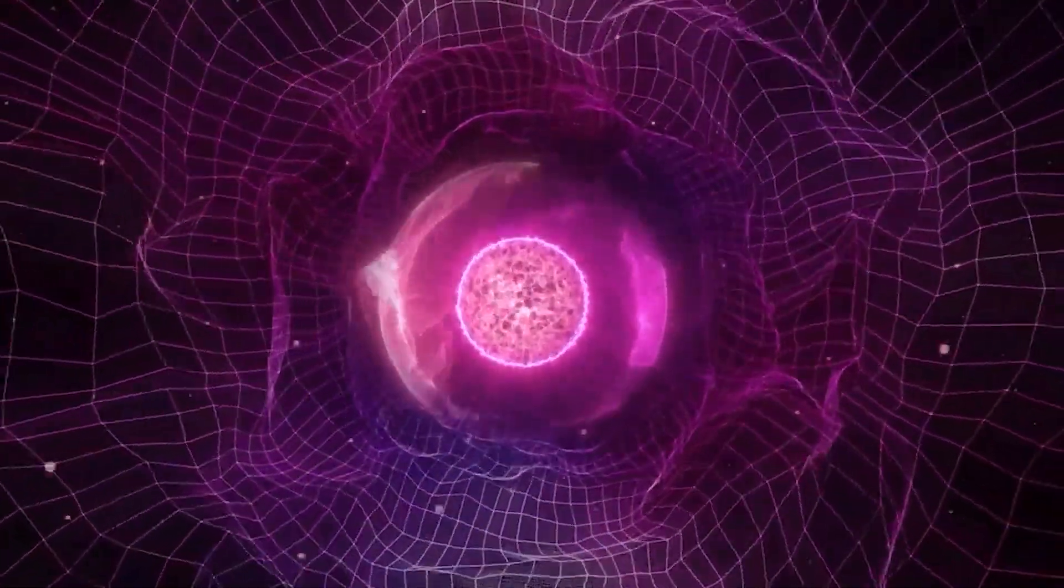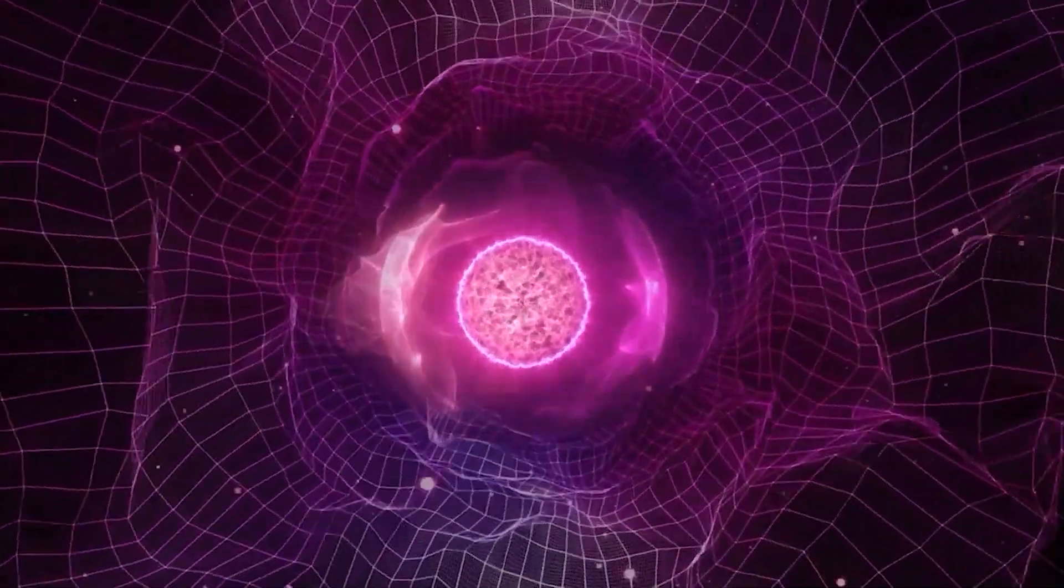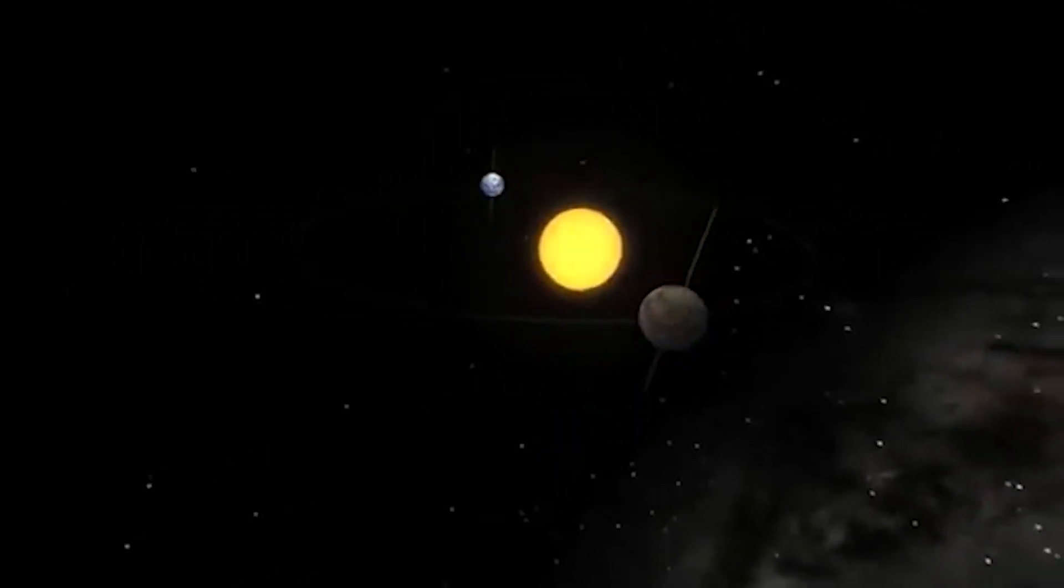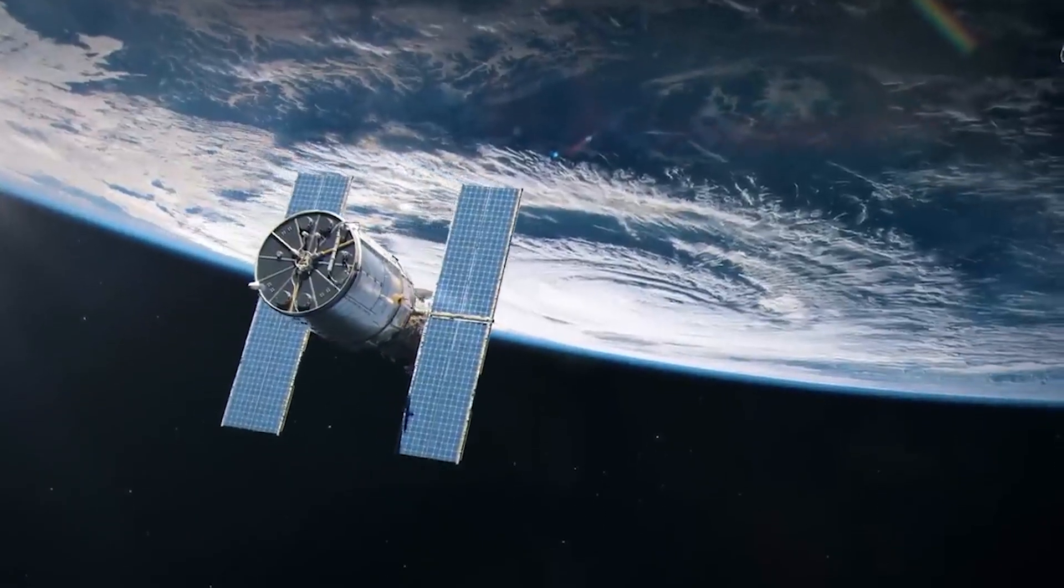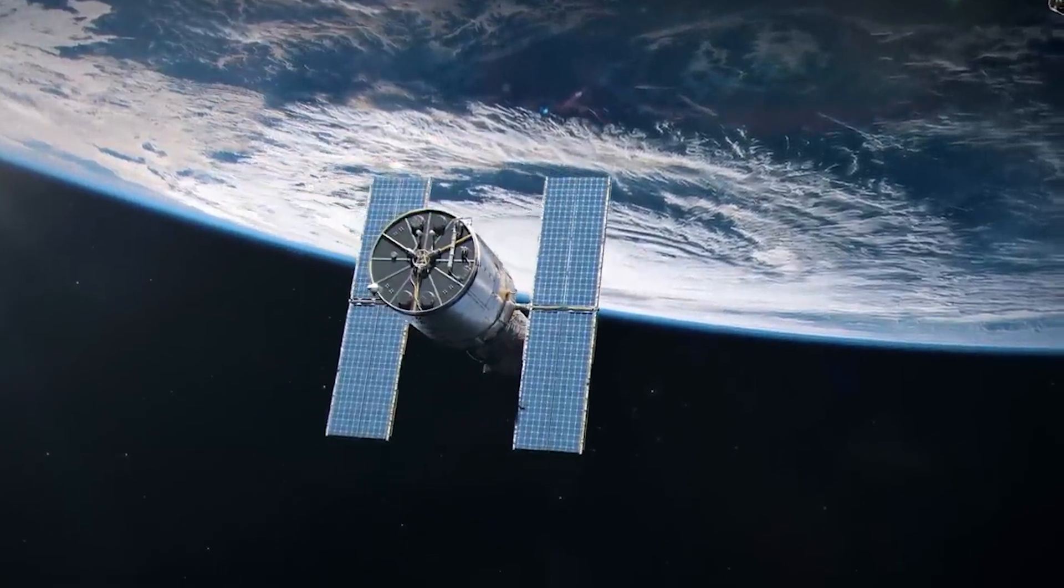Kepler's Laws apply not only to planets orbiting the sun, but also to any object orbiting another, such as moons orbiting planets or asteroids orbiting stars. These laws laid the groundwork for the discovery of exoplanets, planets orbiting stars beyond our solar system.